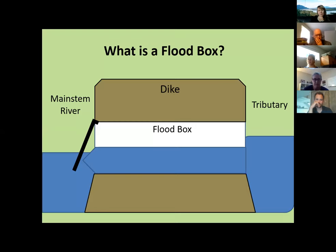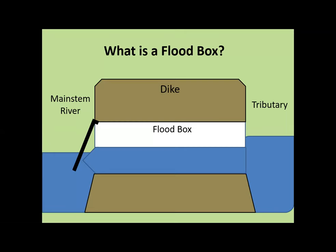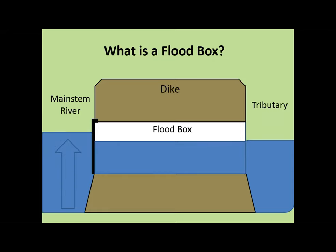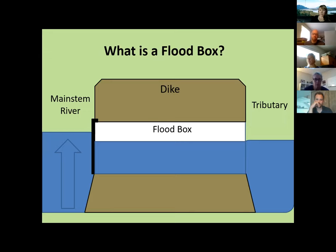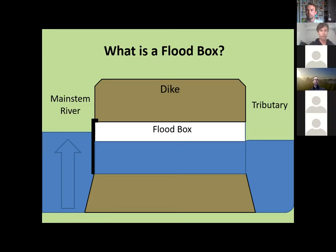So what is a flood box? Essentially it's the same thing as what was already shown — we have the river on one side, a tributary stream on the other side. Here in the lower Fraser you could call it a tide gate, but we call them flood boxes — it's essentially just a culvert with a flap on the downstream side, and when the river level or the tide comes up, that closes.